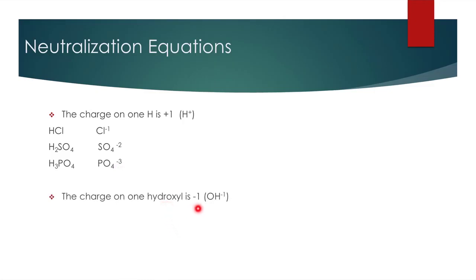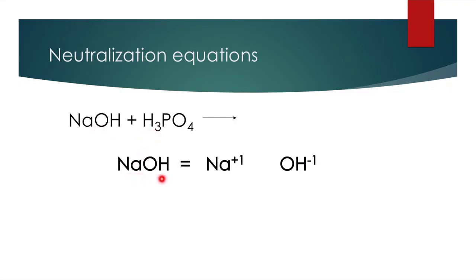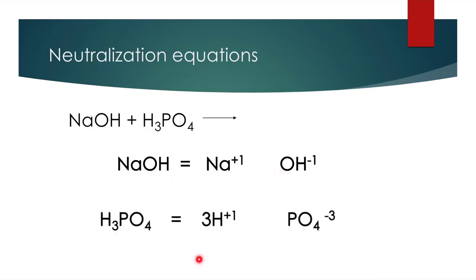Similarly, one hydroxyl ion has minus one charge. So if a base has one OH ion, the counter cation — like Na — will have a plus one charge. As many OH ions there are, that much positive charge will be on the other ion. For example, Ca(OH)₂ has two hydroxyl ions, so Ca has a plus two charge. Taking the example of NaOH and H₃PO₄: NaOH produces Na⁺ and OH⁻, while H₃PO₄ produces three hydrogen ions and one PO₄³⁻ ion — since there are three hydrogens, PO₄ carries a minus three charge.